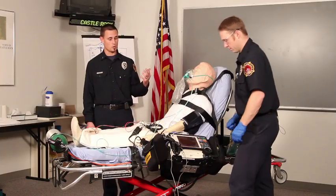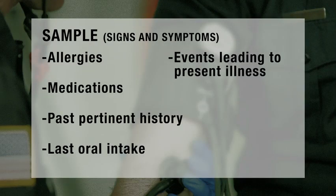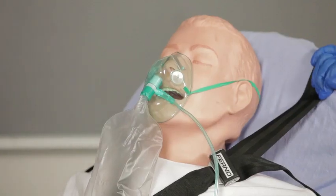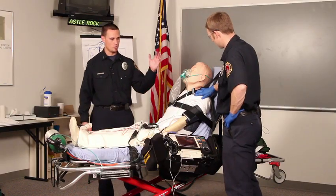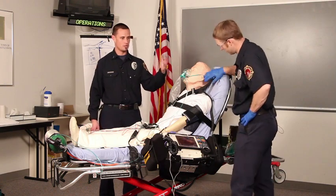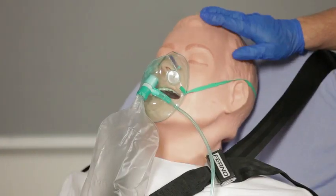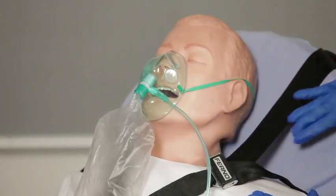The next thing that Joe's going to do is obtain a medical history from the patient. To do this, he may use the mnemonic SAMPLE to provide that information. Continuing the secondary assessment, Joe's going to start from the head of the patient and work his way down. The first thing he's going to do is look at the head and neck and assess for things like JVD, or jugular vein distension.